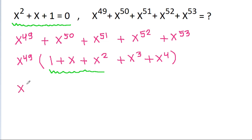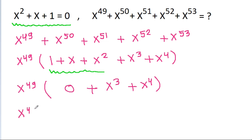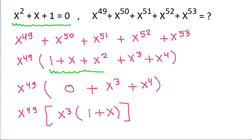So we get x power 49 times 0 plus x cubed plus x power 4. That is x power 49, and if we take x cubed common, then we get 1 plus x. And x power 49 times x cubed is x power 52 times 1 plus x.